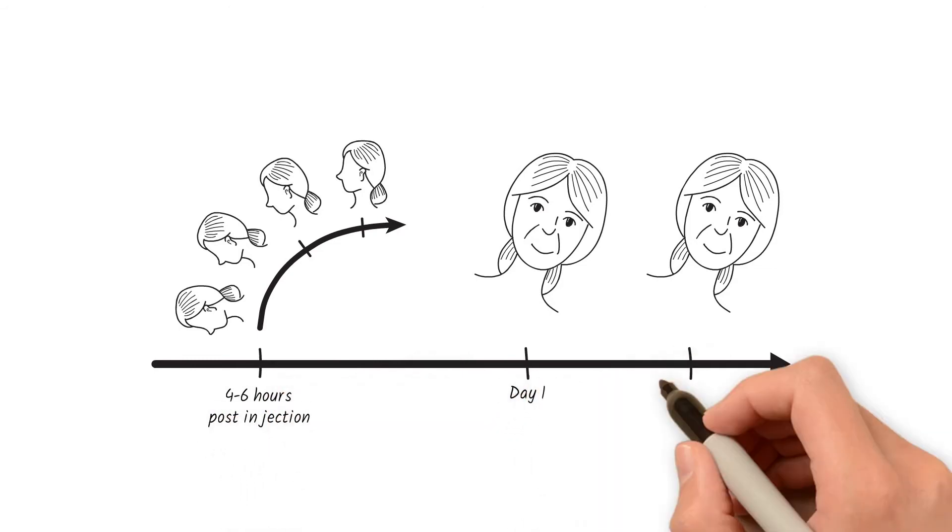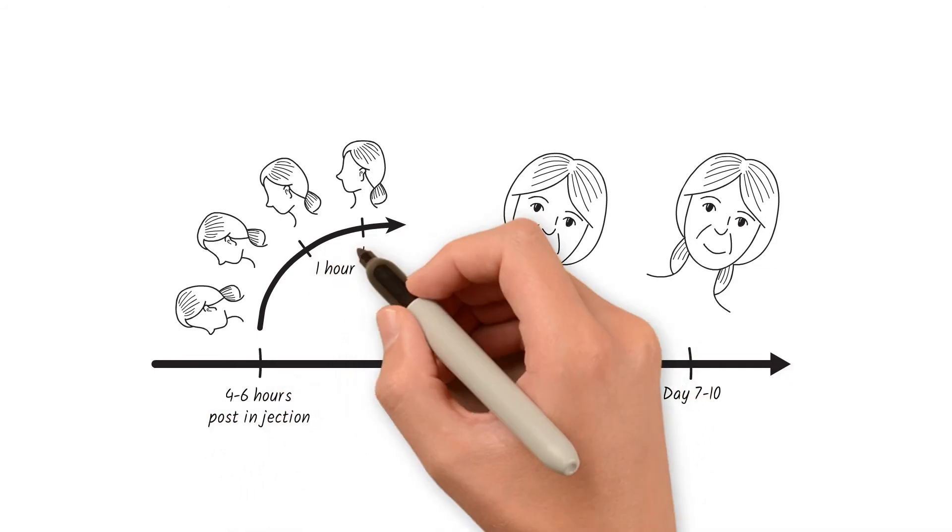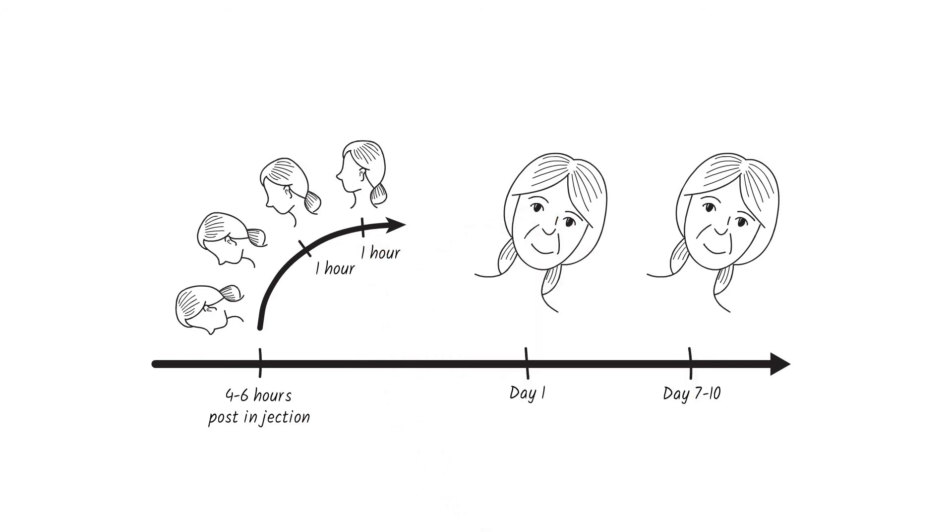Your head is positioned so that the gas bubble floats towards the retinal tear. The gas bubble will seal the tear, preventing additional fluid from seeping through. Because the bubble is relatively small, the success of your procedure will rely on proper head positioning, so that the gas bubble stays directly over the tear.